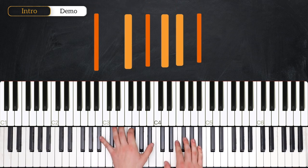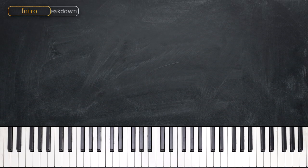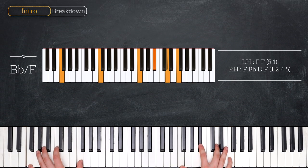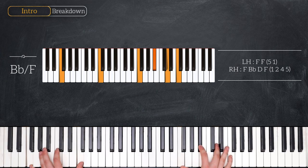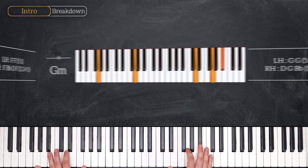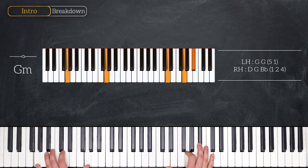So we're in the key of Bb. And our first chord is a Bb over F. We have octave F in the left hand. And in the right hand, F, Bb, D, and F. Then we move to G minor. G octave in the left hand. And in the right hand, D, G, and Bb.